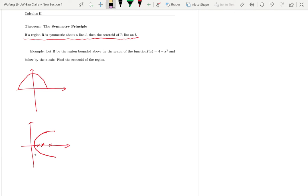So in this example, we have our function is 4 minus x squared. We know that's the parabola, open downward, vertex at (0, 4).